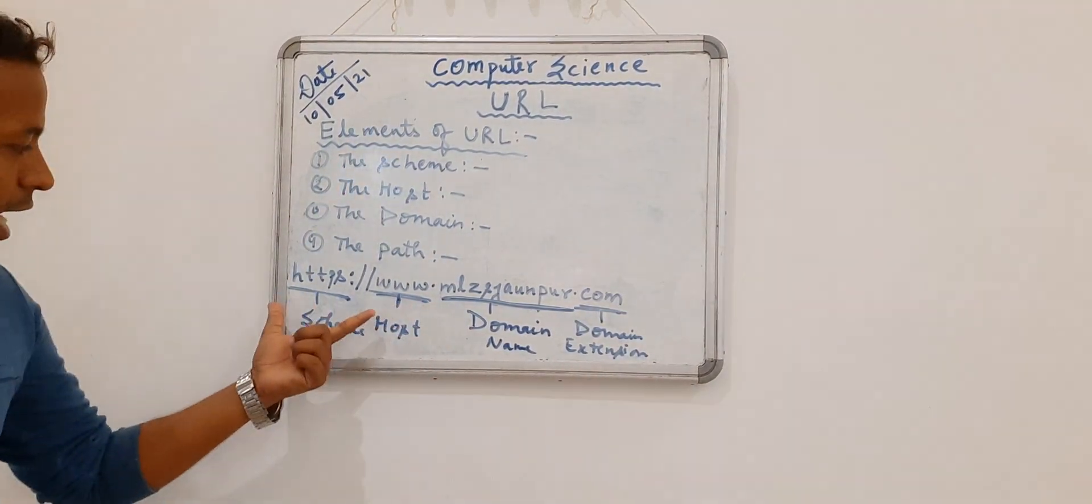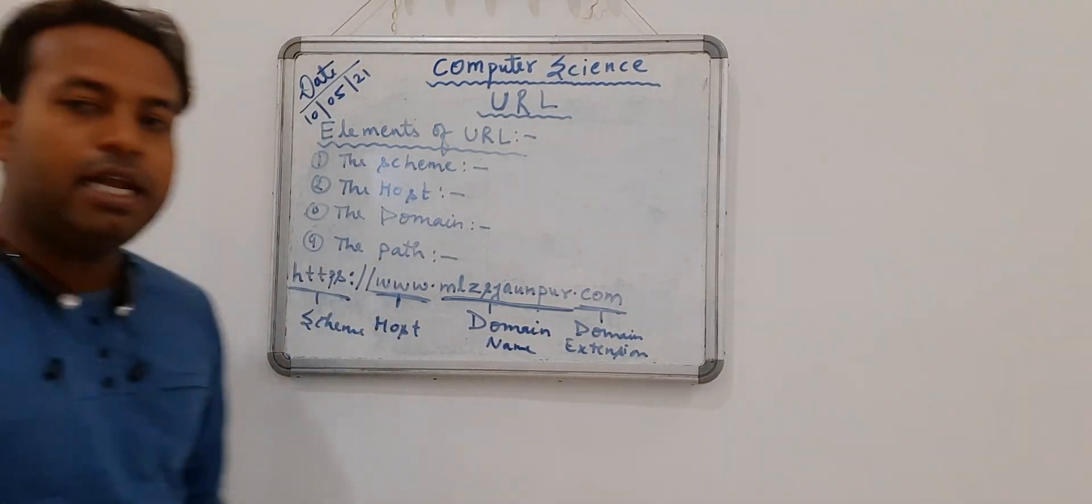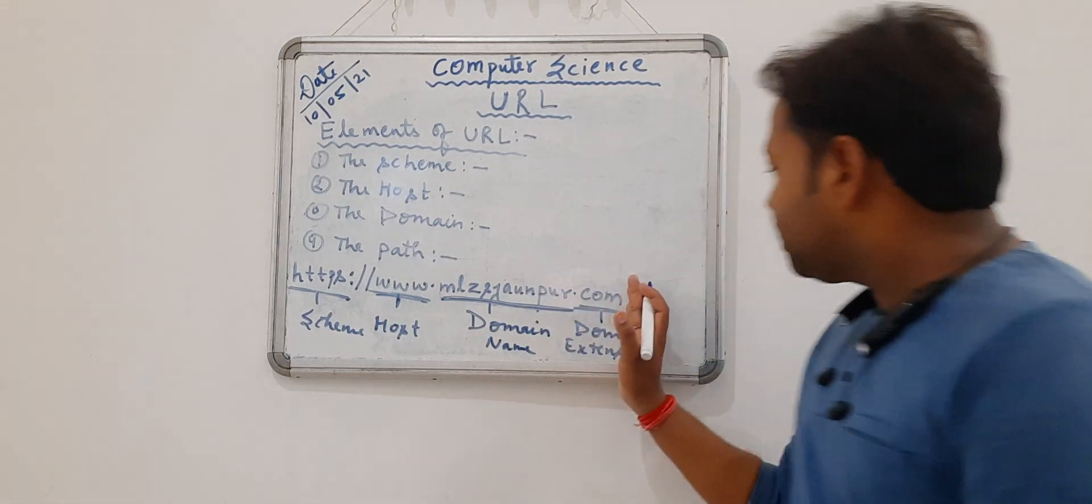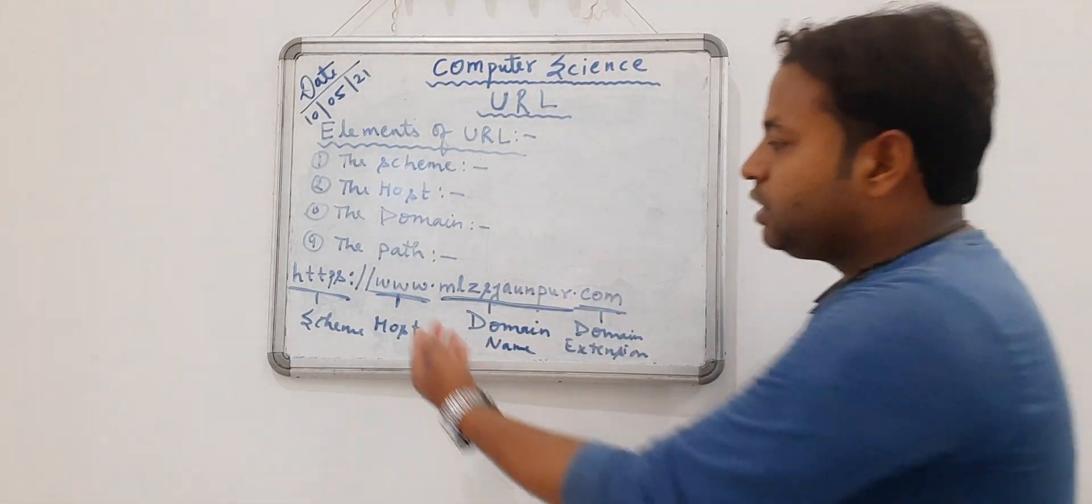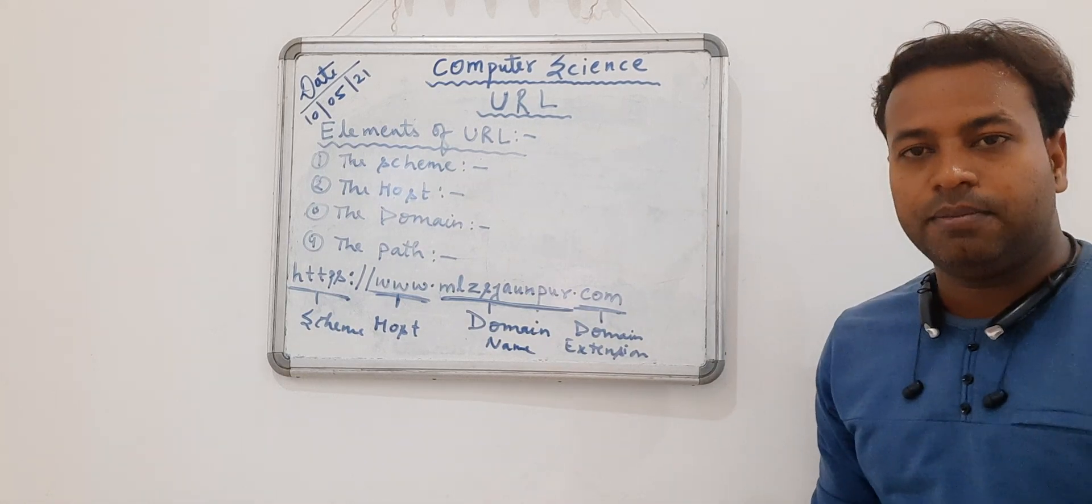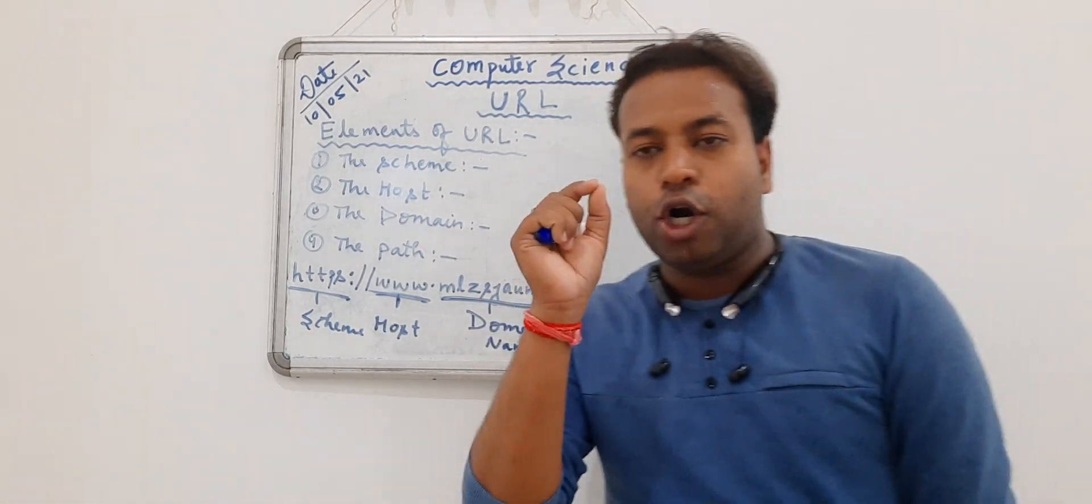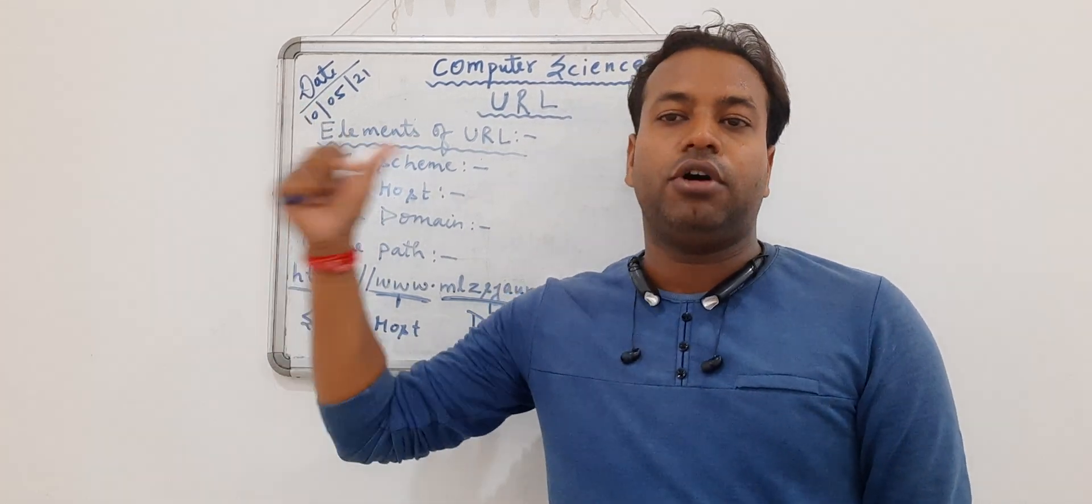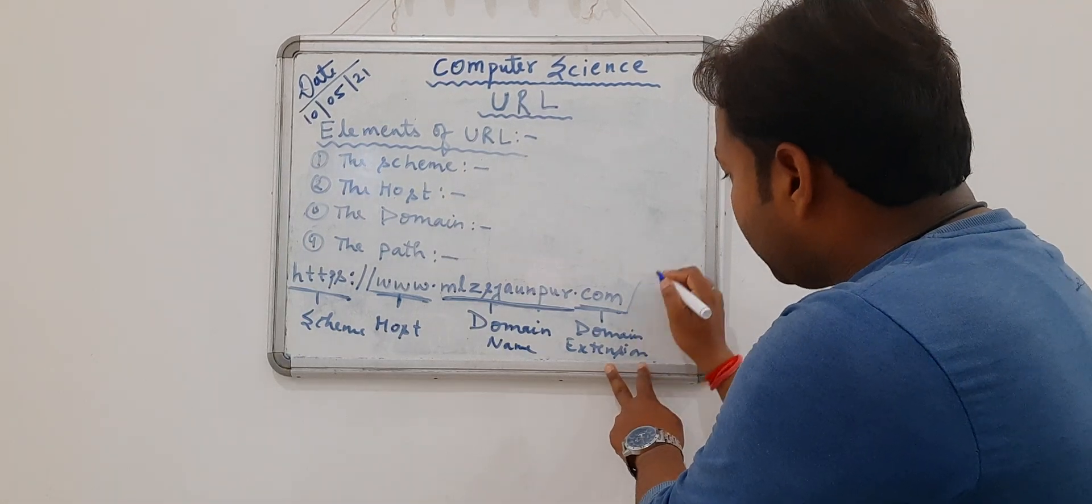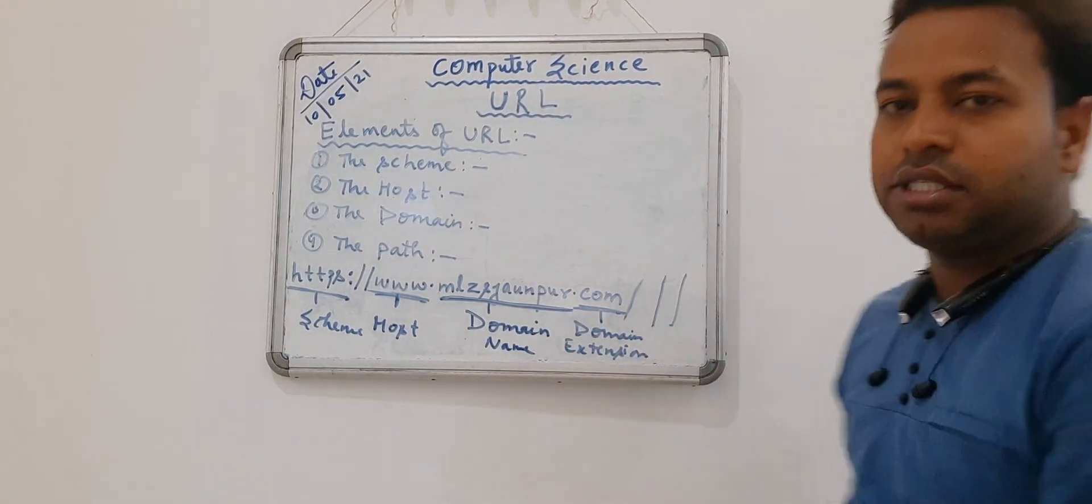So this is the elements of the URL and one more part is there, that is what? Path. Path means the next option. Suppose that I have visited on this website www.amgzjohnpur.com. I have visited over here. After visiting, whatever option I will select or wherever I will visit on the particular website, automatically slash by slash all the options will be added after dot com extension.